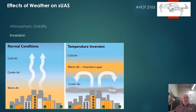Upon preflight evaluation, if the forecast states there is an unstable air mass approaching your location, what would not be a concern? Remember, unstable air masses tend toward turbulent conditions and thunderstorms — so those are obvious concerns. Unstable air tends to produce cumuliform clouds rather than stratiform clouds, so stratiform clouds would not be a concern.